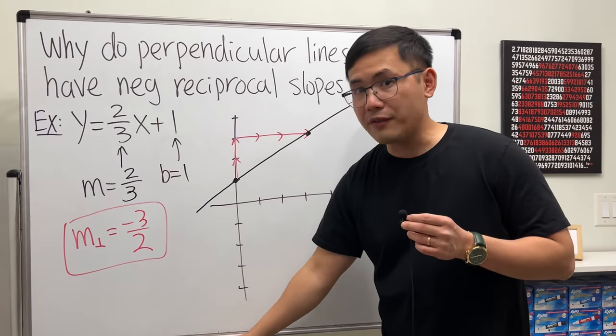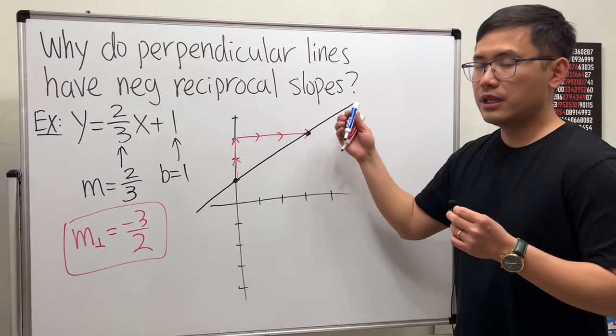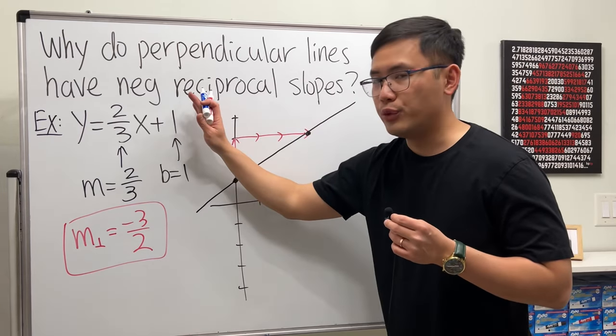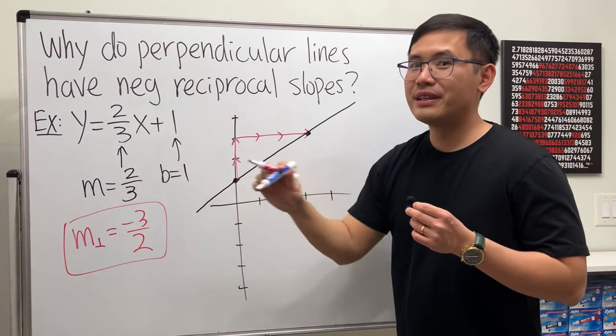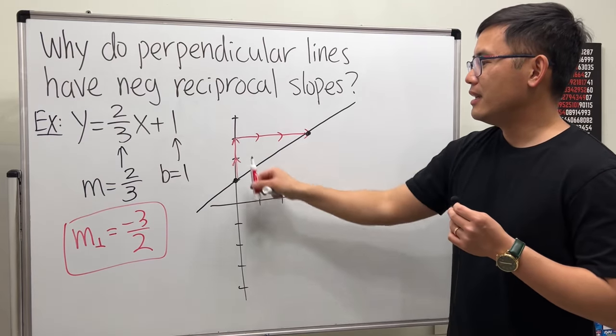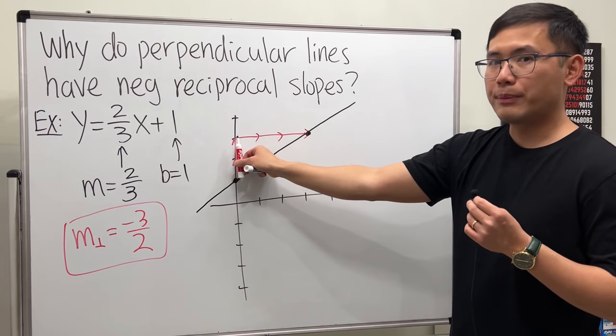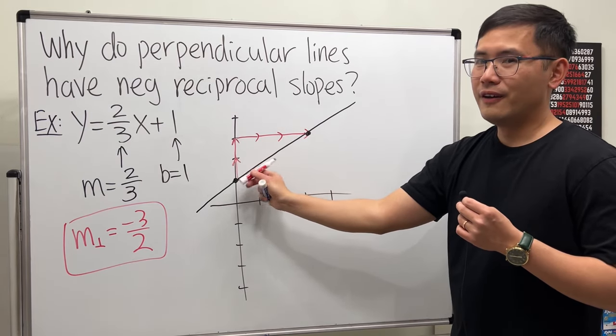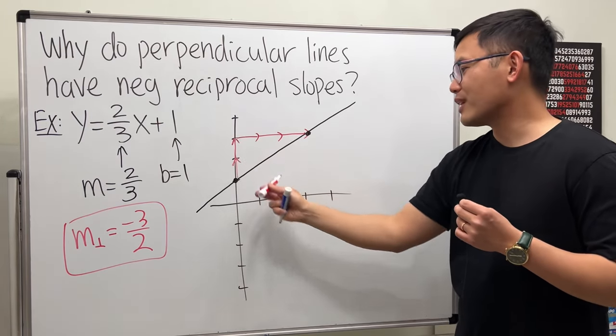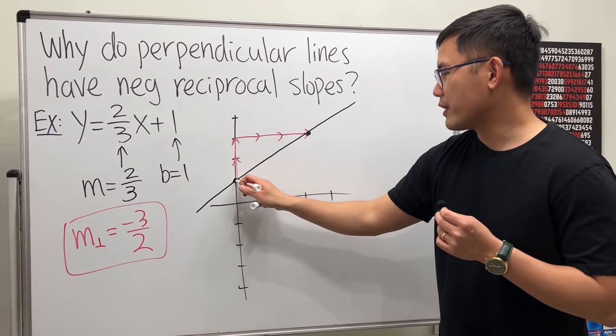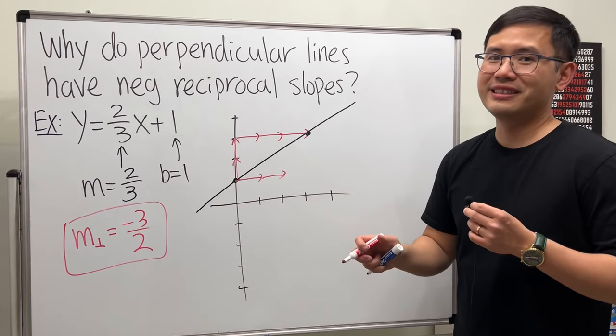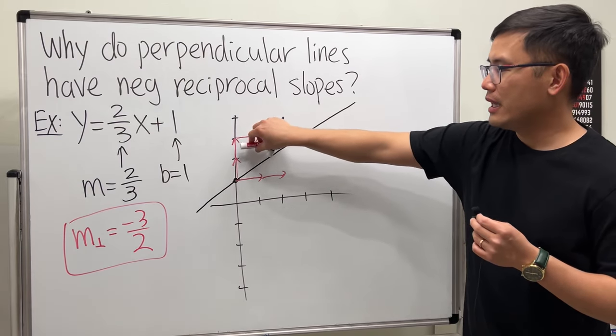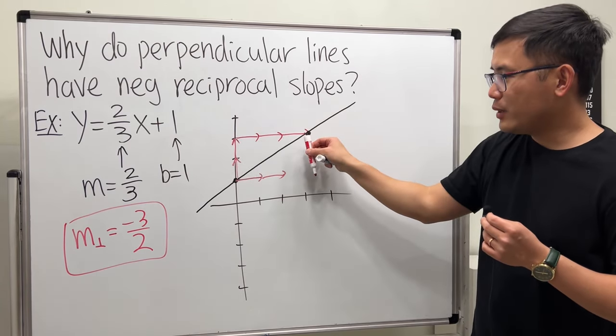Now, if we want to graph a line that's perpendicular to this, you can just imagine we take this line and rotate it 90 degrees to make it perpendicular. So what's going to happen is, earlier we started from here, we went up twice. Now, if we rotate it this way, vertical becomes horizontal. And we will just go from here, and then we go to the right 2 times. And earlier, we went to the right 3 times. And right now, we have to turn 90 degrees.